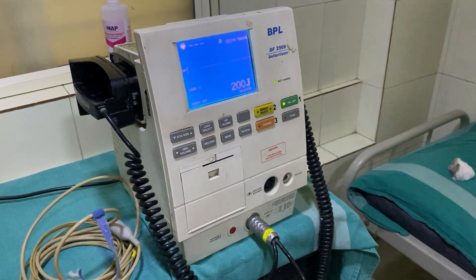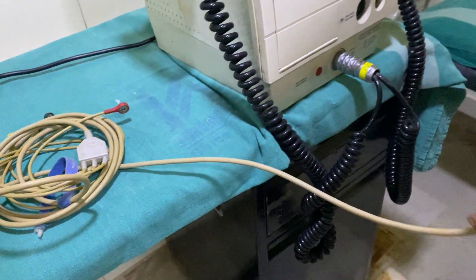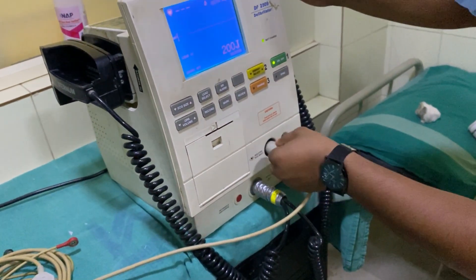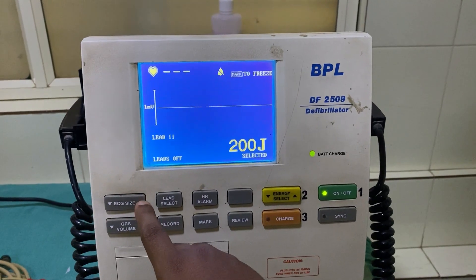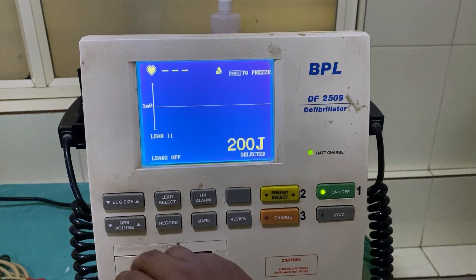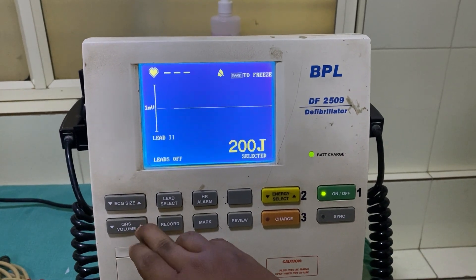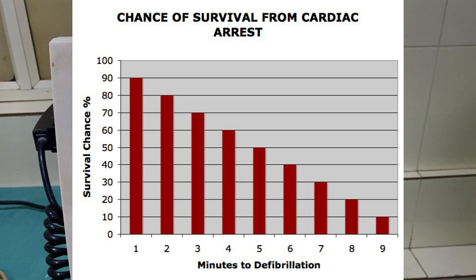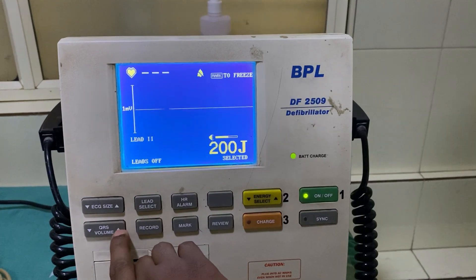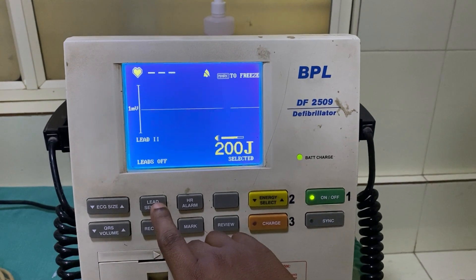Defibrillators are used mostly in operating rooms, emergency departments, and intensive care units in hospitals. You can also find public access defibrillators installed in railway stations, airports, and sports complexes. They are most effective when a shock is applied within the first minute of someone collapsing — if used within the first minute, the survival rate can be as high as 90%.